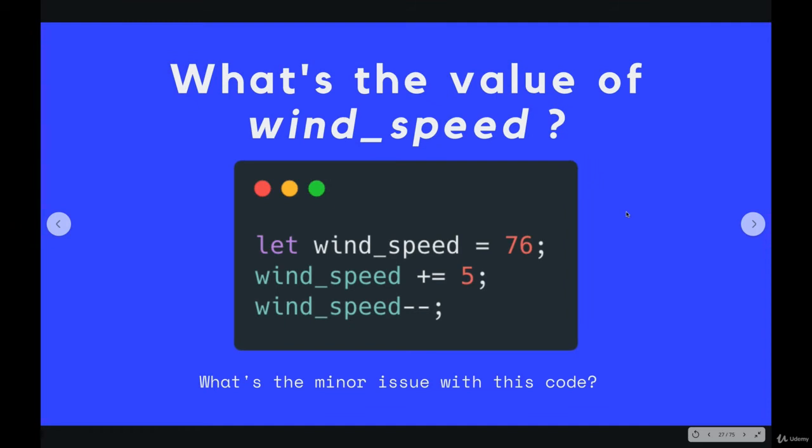And now the final one. What's the value of wind_speed after these three lines run? So the first one initializes wind_speed with a value of 76. Then we use plus equals to add 5 to the value. So that takes us up to 81. And then we use the unary operator, minus minus, which subtracts 1 from wind_speed and saves it to wind_speed. So we go from 81 down to 80. So wind_speed is 80.